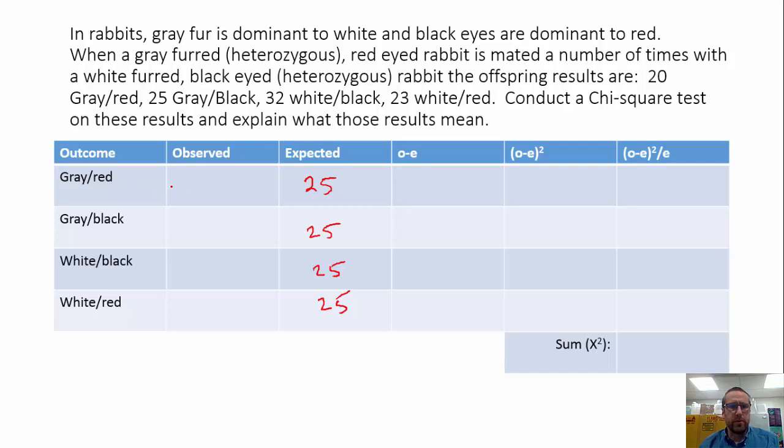And then we can pull in gray-red, 20, gray-black, 25, white-black, 32, white-red, 23. We need to do a little subtraction here. So 20 minus 25 is negative 5. This is 0. 32 minus 25 is 7. 23 minus 25 is negative 2. Alright, so O minus E squared in this case is going to be 25. In this case, it's going to be 0. Here it's going to be 49. And here it'll be 4.